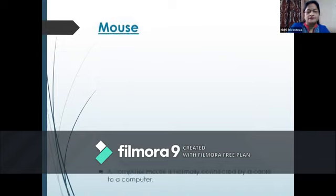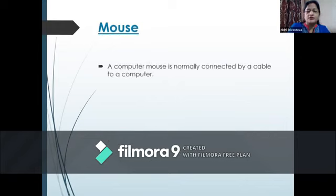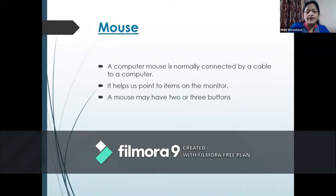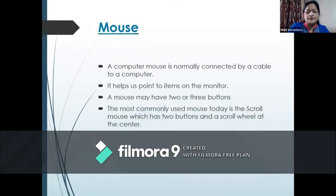Mouse. A computer mouse is normally connected by a cable to a computer. It helps us point to items on the monitor. A mouse may have two or three buttons. The most commonly used mouse today is the scroll mouse, which has two buttons and a scroll wheel at the center.